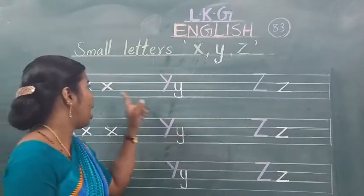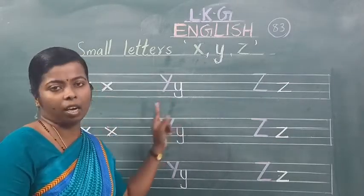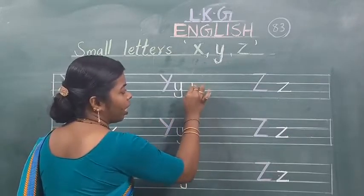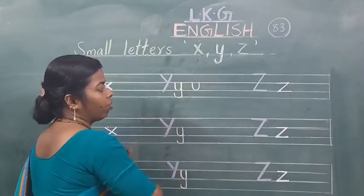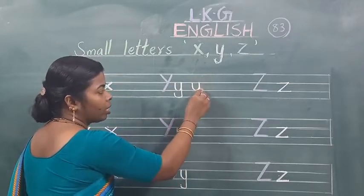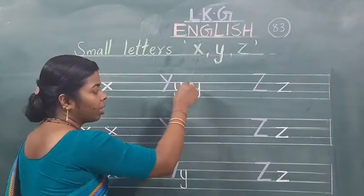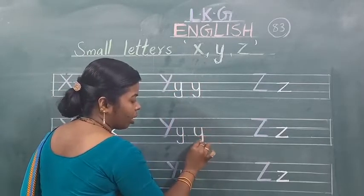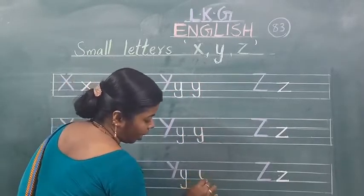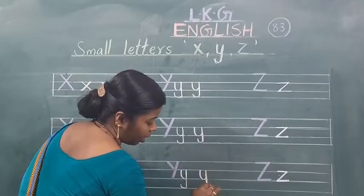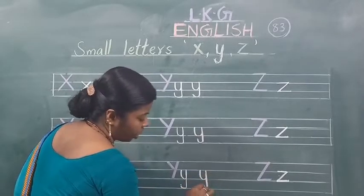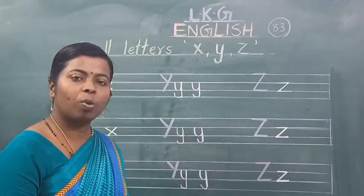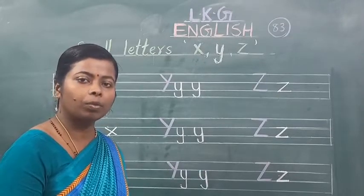X ke baad Y aata hai. Small letter Y kaisa likhna hai? Aap curve, then standing line, curve. This is small letter Y.